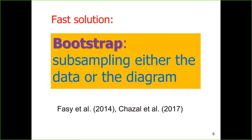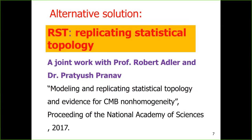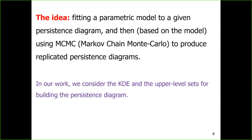The first solution is to use the bootstrap, which means to sub-sample from what we have — either from the data or from the persistent diagram itself. This is already considered in Fasy et al. and in Cazals et al. But we want to suggest something else. We suggest the RST — Replicating Statistical Topology — a joint work with Professor Adler and Dr. Pratyush Pranav. The idea is that if we have the persistent diagram, we fit some parametric model to the points on it, and once we have this model, we can produce replicated persistent diagrams using MCMC.